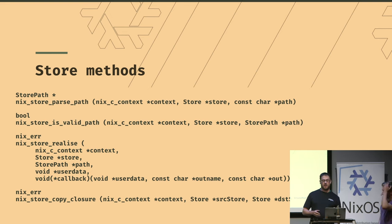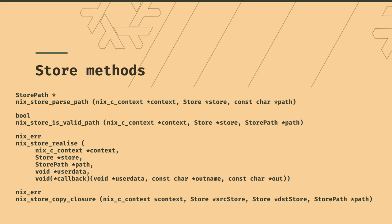Some of the store methods: once you have the store handle, you can start manipulating it. You can parse a path, check if something is valid or exists. The most interesting one, the thing that really gives you power here, is nix store realize. This is where you take something like a derivation and realize it into something else, doing some side effects on your store and creating other things. It's the building block underneath build. When the realize completes, there's a callback - you get some user data you can put into the system and get it back out. So if you want to create a pipeline, you have all the pieces you need.